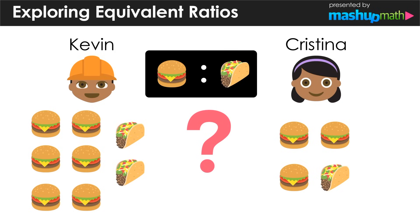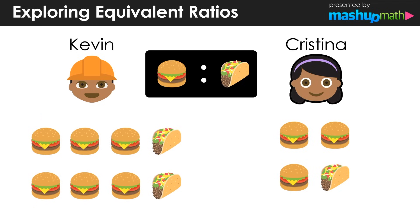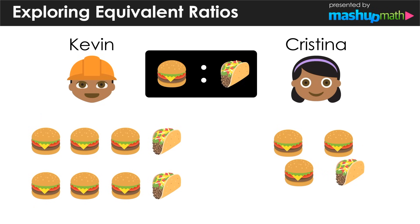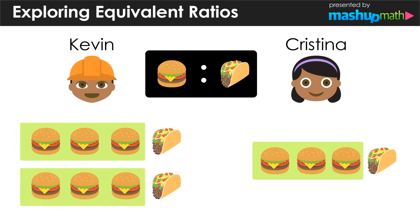With this ratio in mind, let's regroup both Kevin and Christina's orders. Doing this allows us to see that for both of them, for every three hamburgers ordered, there is one taco.